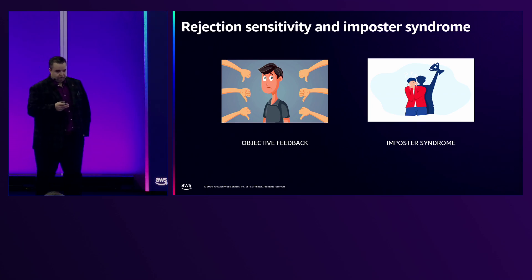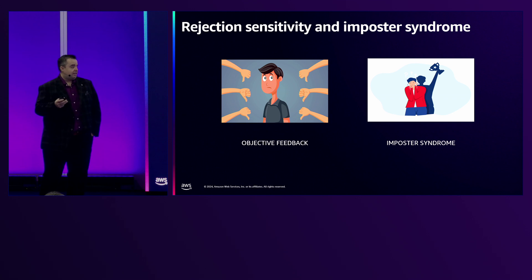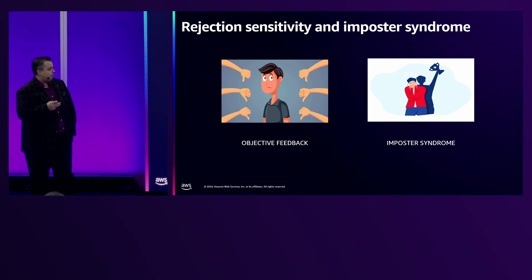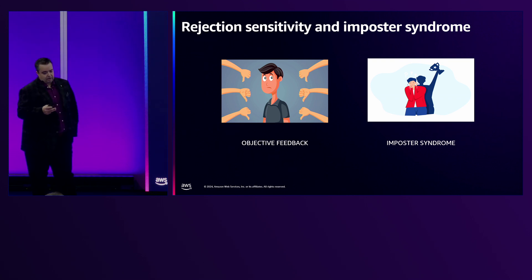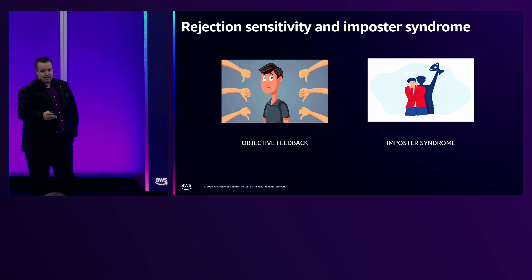In terms of imposter syndrome — most people encounter it, but with black-and-white thinking and rejection sensitivity, it is really prevalent within neurodiverse individuals. Helping to validate an idea, validate a technical document or technical design — these things can be leveraged to help with that.